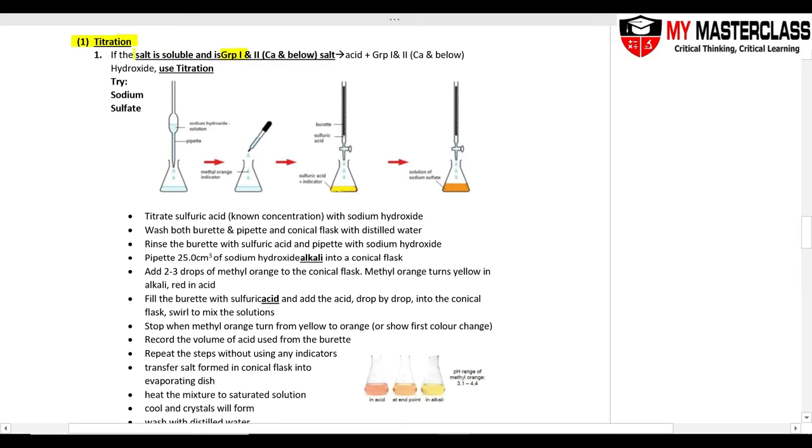Choose Group 1 salt if the salt is soluble and it's Group 1 or Group 2, must be calcium and below, because calcium and below - the calcium hydroxide, barium hydroxide - these are alkali. Magnesium hydroxide is a base. Magnesium is above calcium, it's a base. So if the salt is calcium and below salt or Group 1 salt, pick titration.